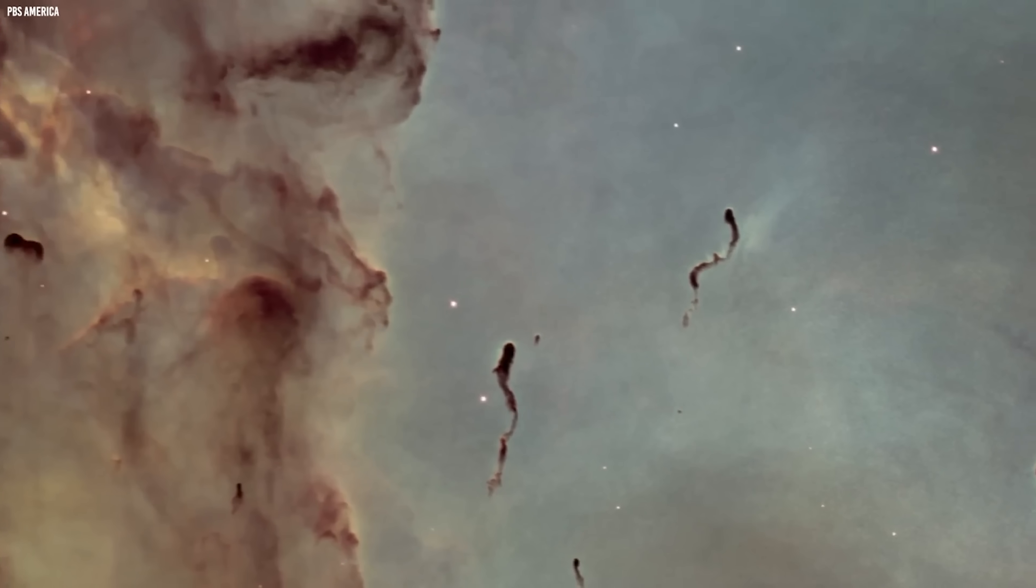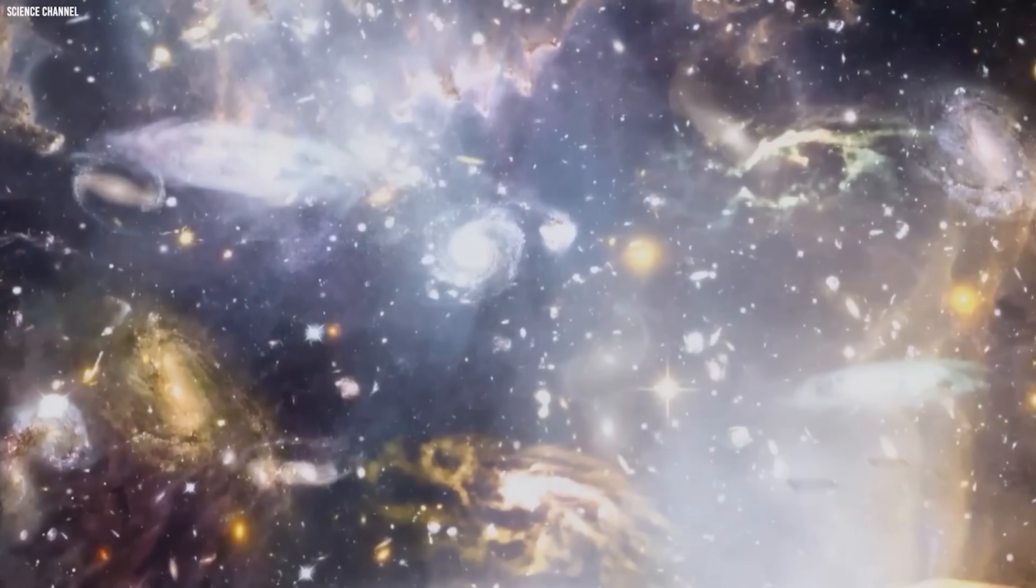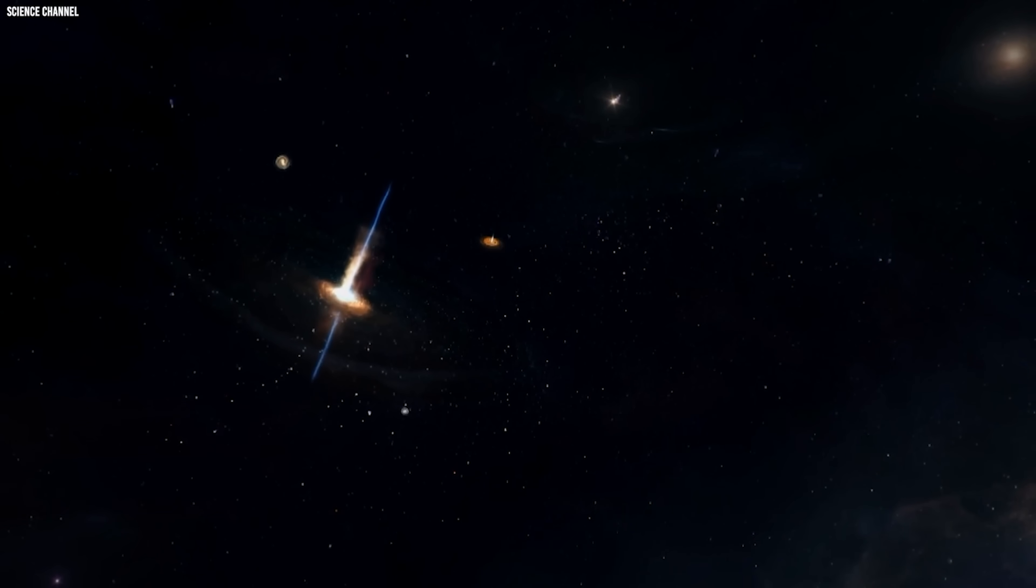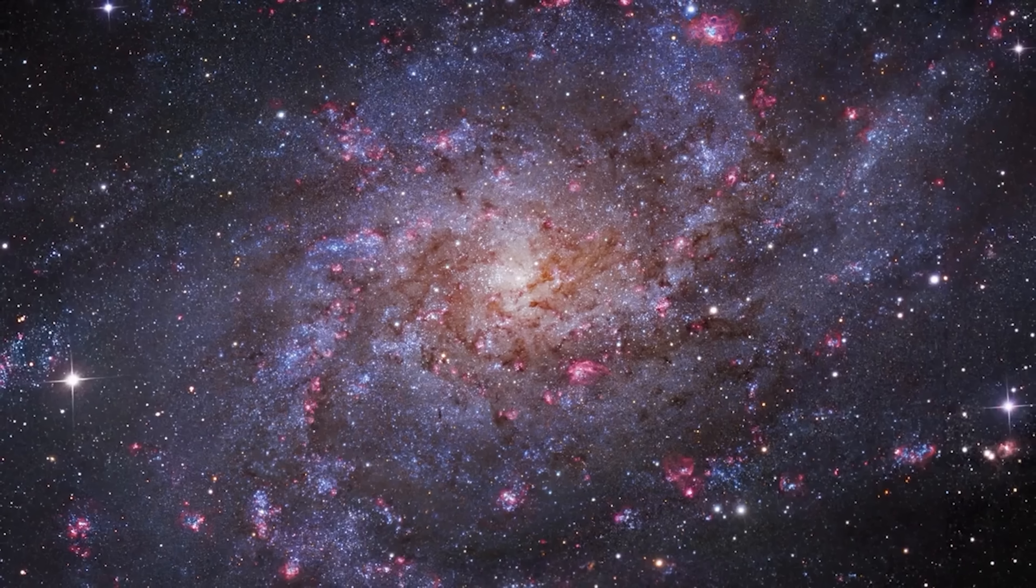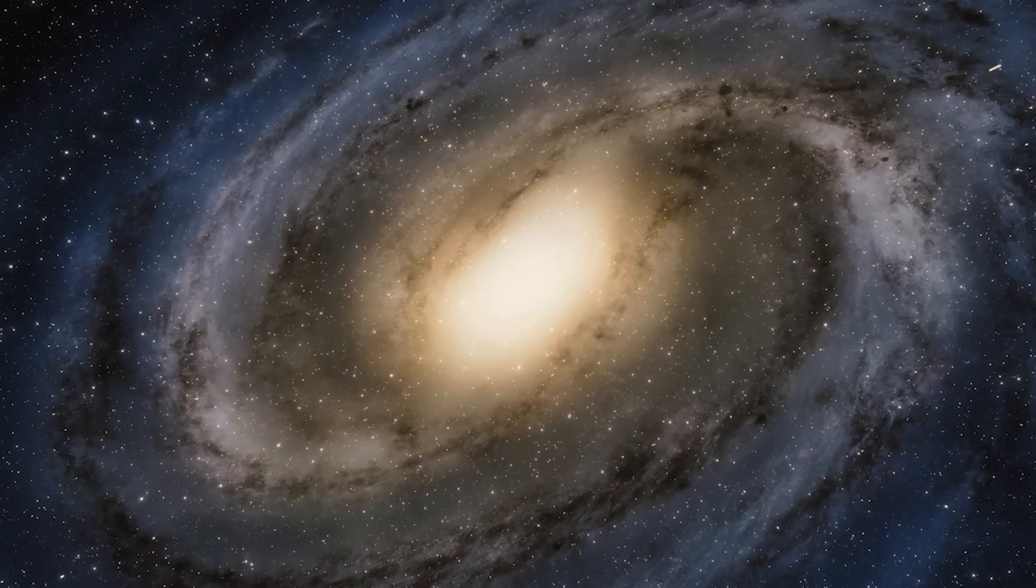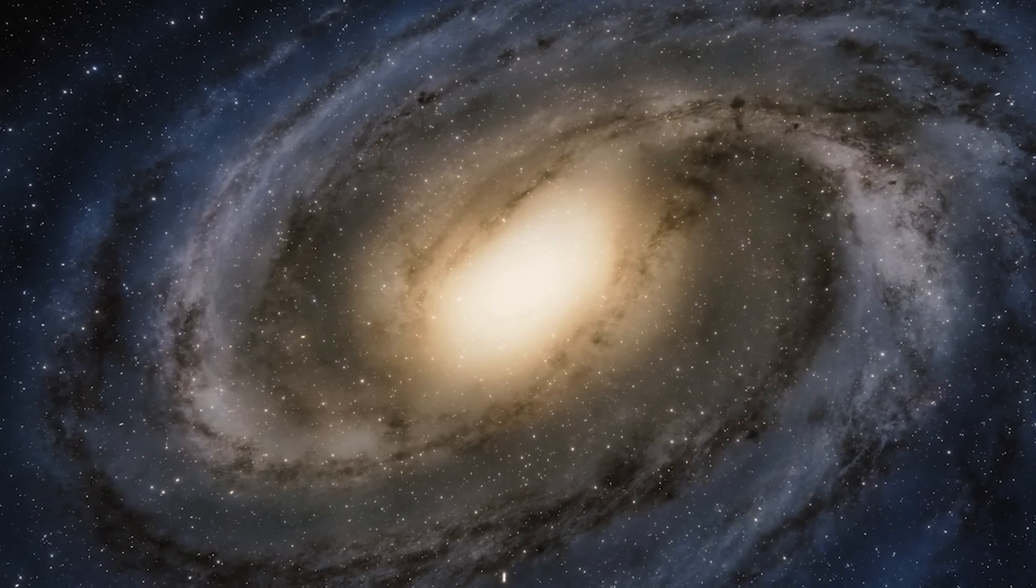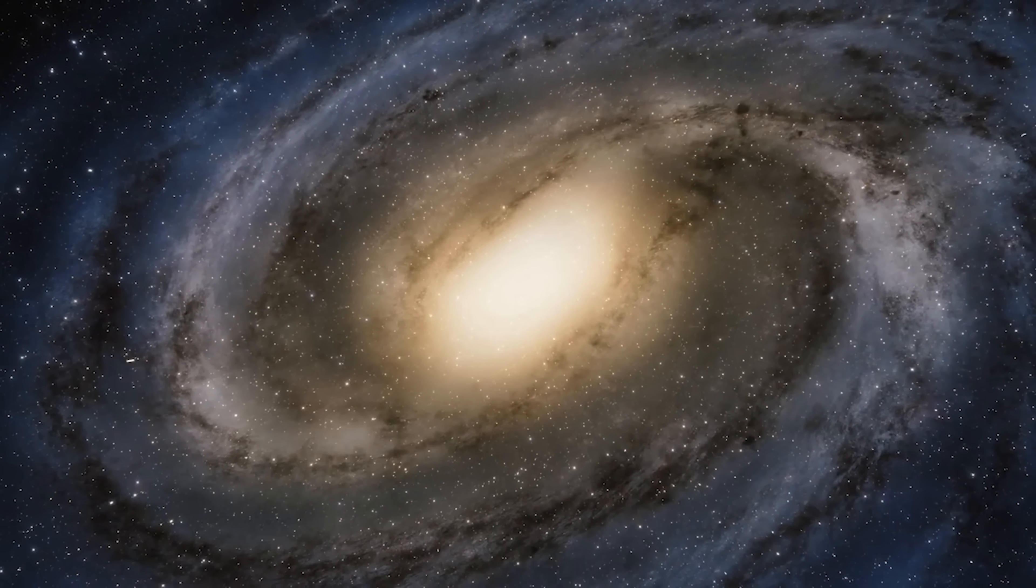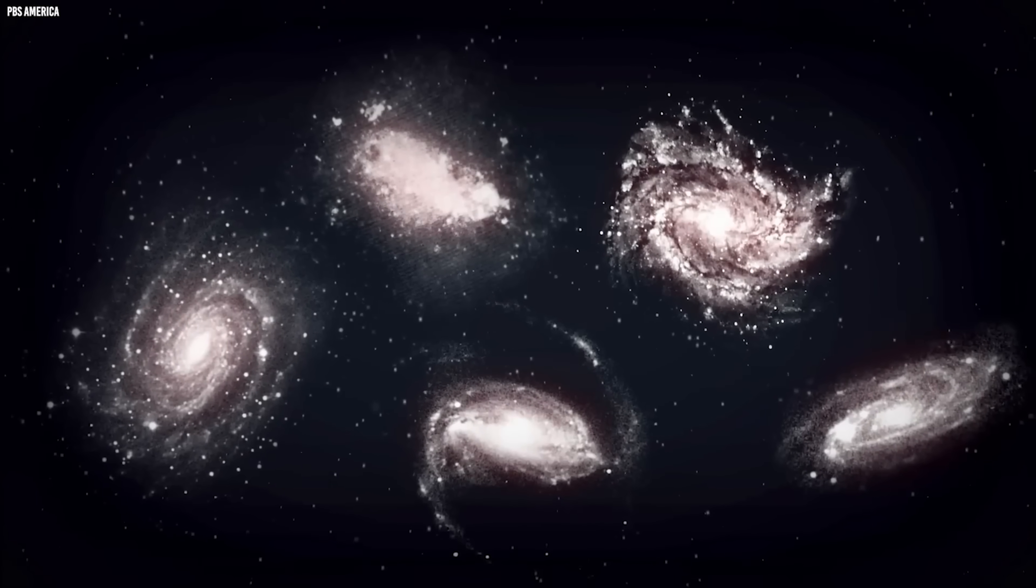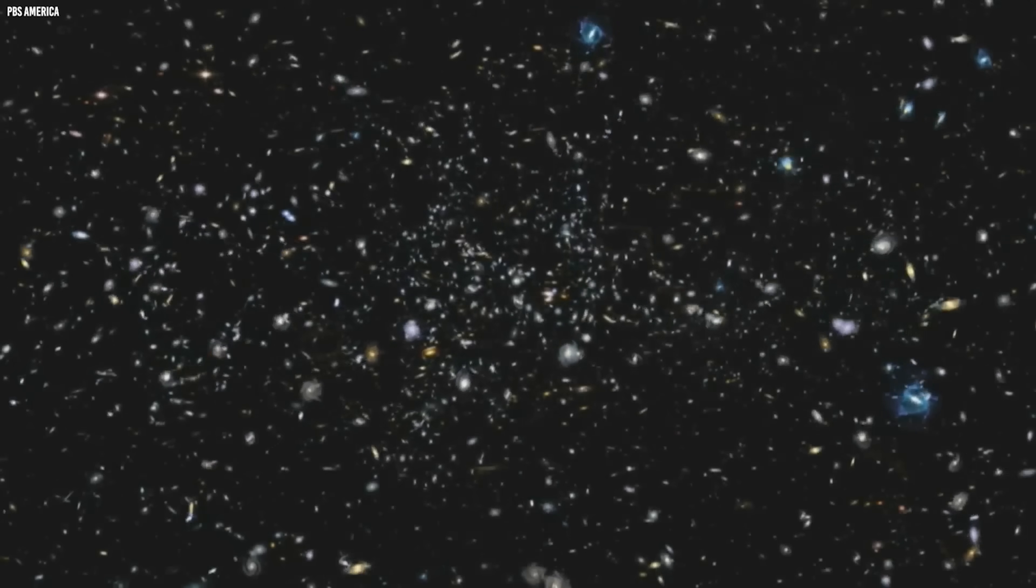Our first stop takes us into the relatively nearby cosmos, only a few billion light-years away. Here, galaxies appear in their fully grown forms, majestic spirals, enormous ellipticals, and chaotic irregulars locked in slow gravitational dances. Because of the sheer scale of the Cosmos Webb field, we can see how these galaxies gather into colossal superstructures that span unimaginable distances.